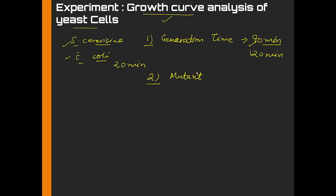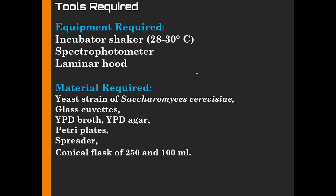Now to perform this experiment what is required? You require certain equipment and certain materials like an incubator shaker at 28 to 30 degrees Celsius, because this is the temperature where the yeast cells grow. If the same experiment has to be performed for bacteria, then someone has to grow at 37 degrees Celsius. The second thing required is a spectrophotometer and a laminar hood.